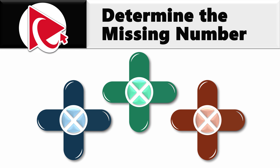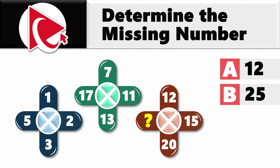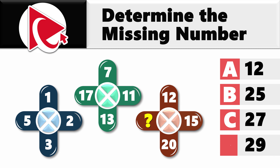Then comes the missing number, which you need to calculate and select out of four possible choices: choice A is 12, choice B is 25, choice C is 27, and last but not least, choice D is 29.